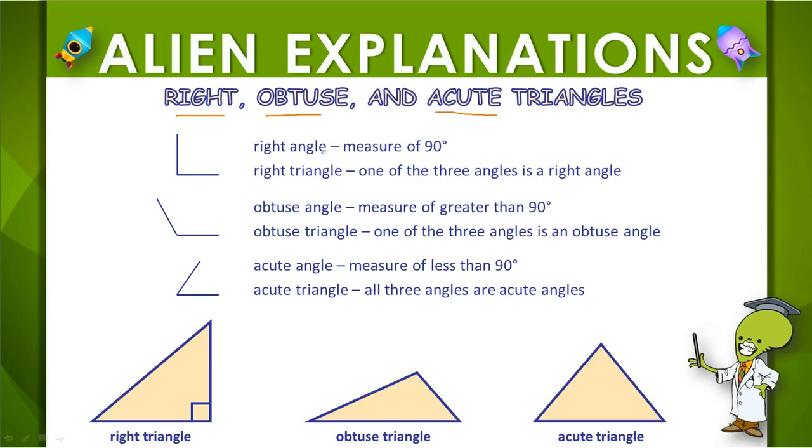Remember that a right angle has a measure of 90 degrees, and it looks like a corner. When a triangle has a right angle, we call it a right triangle.